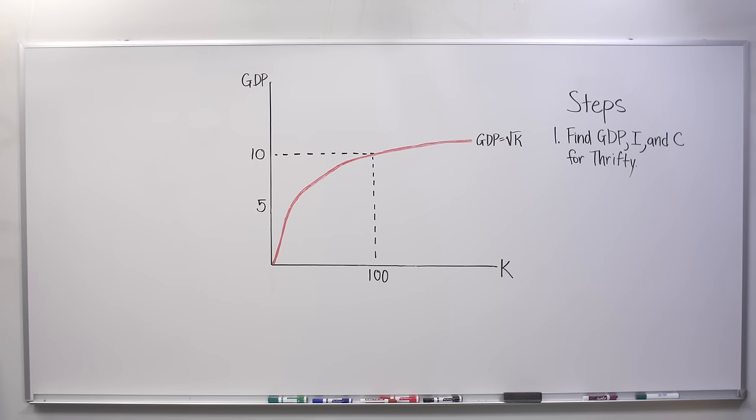More formally, we can graph its investment function as I equals 0.5 times the square root of K. If it's producing 10 and investing 5, what's left over for consumption? 10 minus 5 is 5.